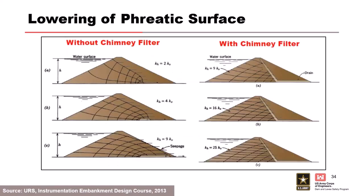From a seepage and phreatic surface standpoint, these figures show how chimneys impact the phreatic surface. Without the chimney, flow lines come through and you get seepage on the face. Put in the chimney and it addresses it. If you keep increasing conductivity, the chimney can still handle it — as long as it's appropriately designed. At higher conductivities that's where you might start looking at needing a two-stage chimney.